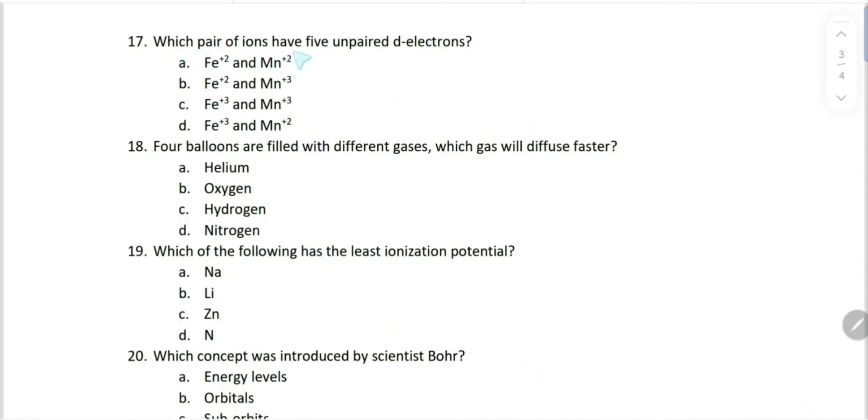Which pair of ions have five unpaired d electrons? Fe²⁺, Mn²⁺ - let's see. This is the electronic configuration of iron: 4s² 3d⁶. Now if it becomes Fe³⁺, iron will lose two electrons from s and one electron from d. So it becomes 4s⁰ and 3d⁵. Since d has five degenerate orbitals, according to Hund's rule we'll get all five unpaired electrons in Fe³⁺.